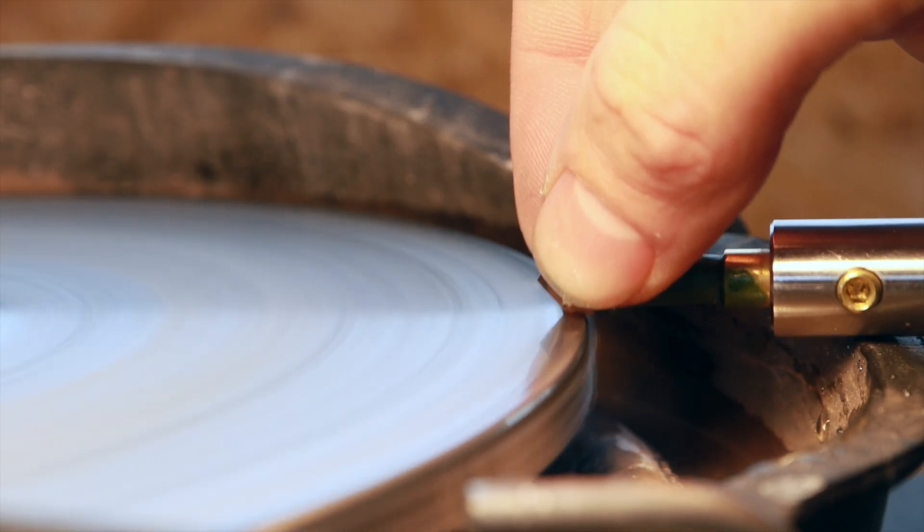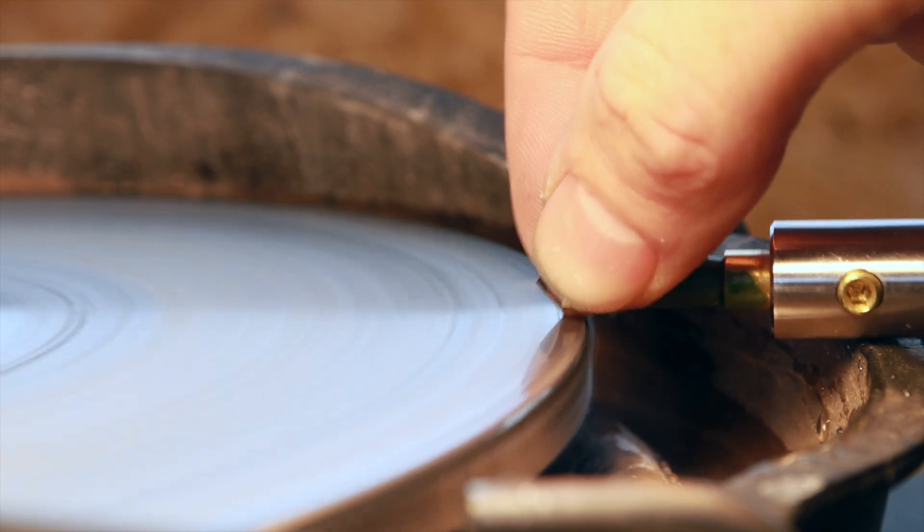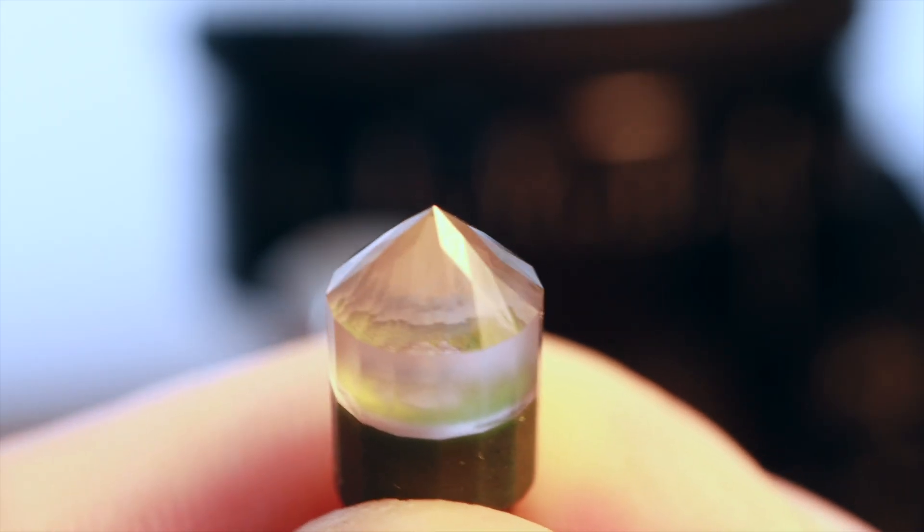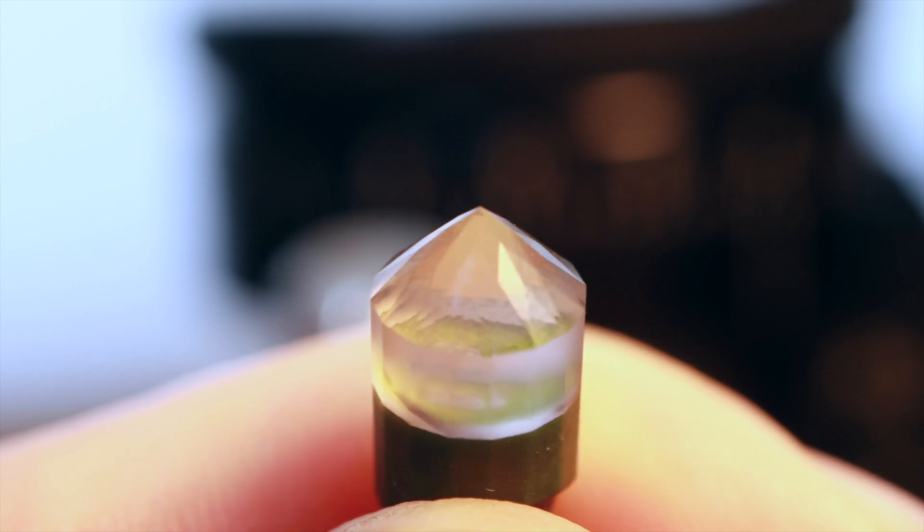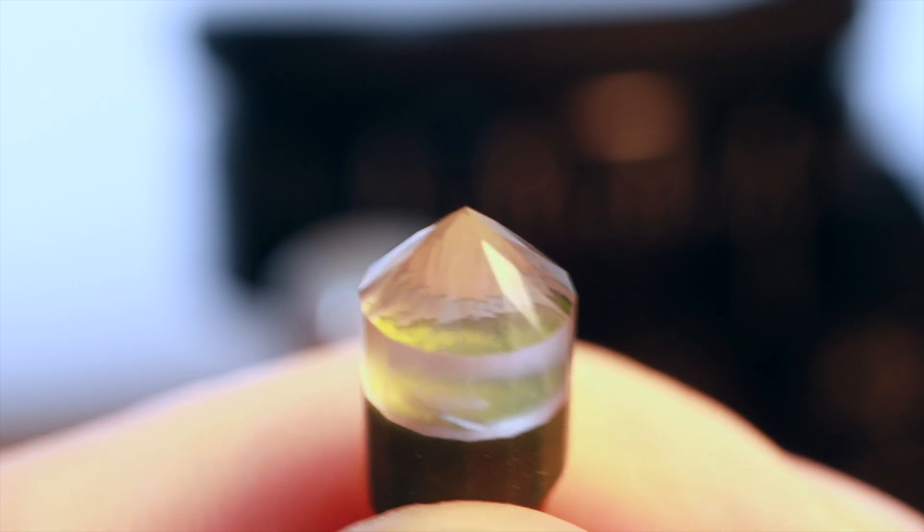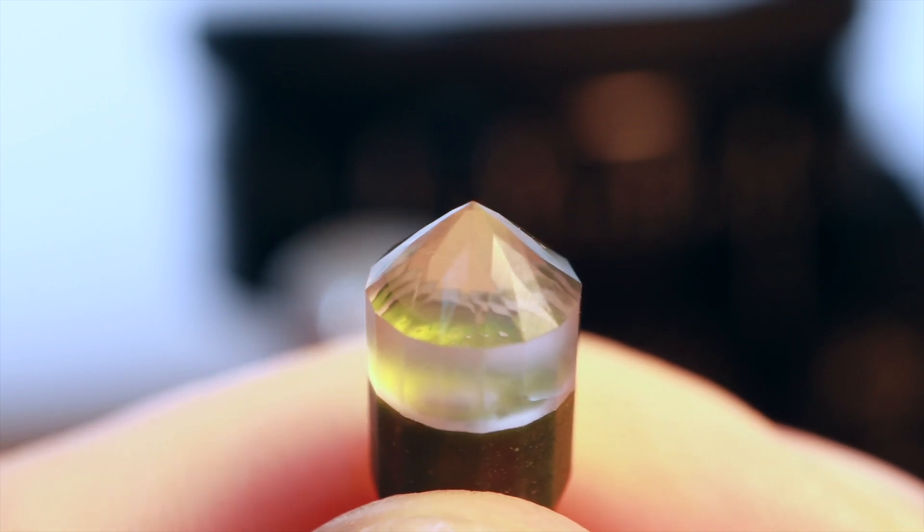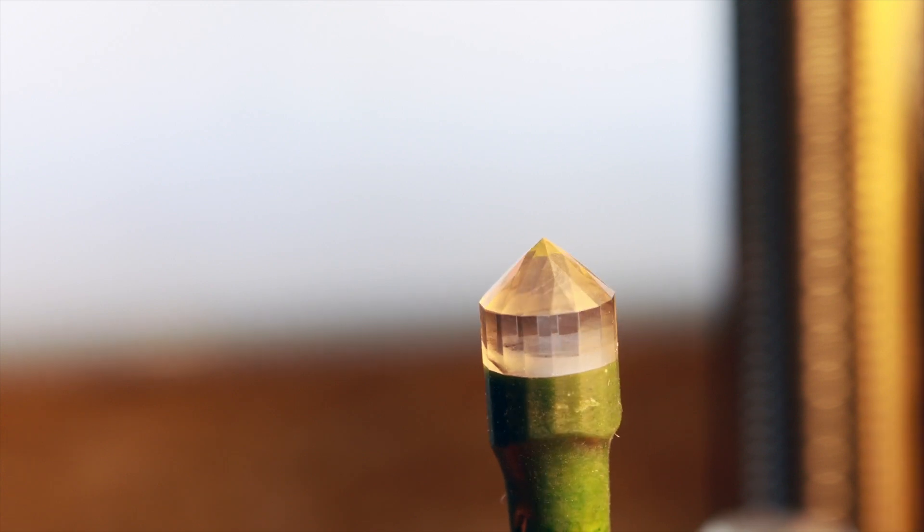After finishing cutting the pavilion facets, I pre-polish all of the facets I've cut so far. This will remove any of the heavy scratches left over, and you can start to see the stone become a little bit more transparent.